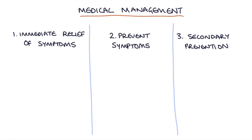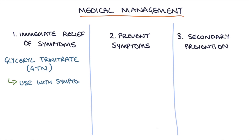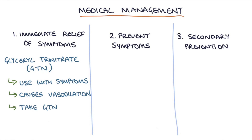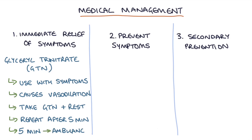Immediate symptomatic relief is achieved using glyceryl trinitrate (GTN) spray, which causes vasodilation and opens up the coronary arteries to allow more blood flow. Tell the patient to take their GTN and rest; if symptoms still persist after five minutes, repeat the GTN dose. Then if they're still in pain five minutes after the repeat dose, call an ambulance.